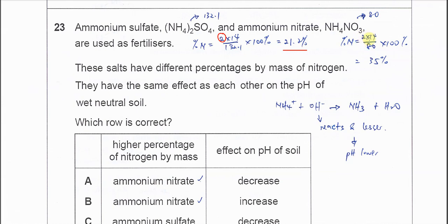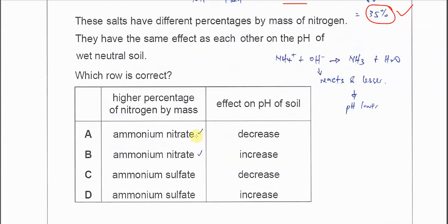2 times 14 over 80, so you get 35%. Ammonium nitrate has higher percentage, and the answer now can be A or B. C and D out.